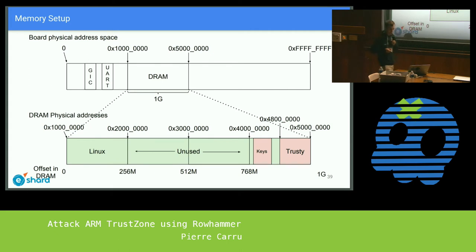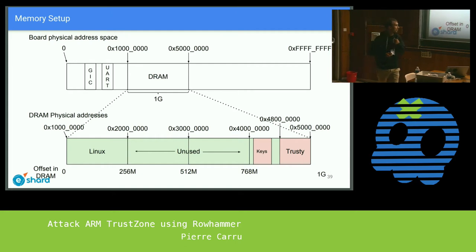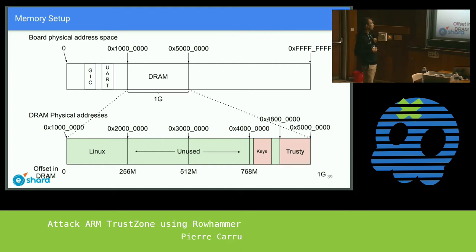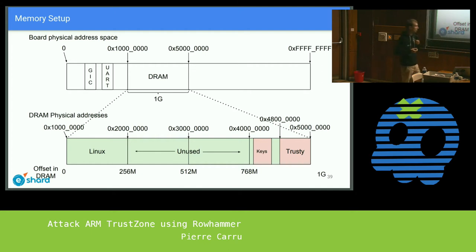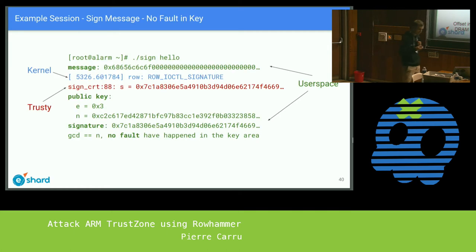How the physical memory is split: this is the whole 32-bit virtual memory view of the system from the CPU. The DRAM is mapped at a physical address, and the parts marked in red are reserved as secure by the DRAM controller. Linux can only access the non-red parts, so we do a Rowhammer attack on the border of the memory regions. That will corrupt some bits in the keys in the secure region, letting us retrieve the private keys.